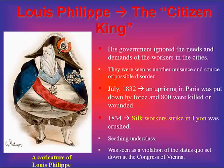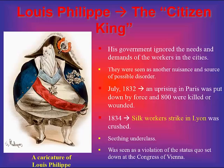However, the liberal monarchy had little or no sympathy for the working and lower classes. Workers were demanding protection for their jobs, better wages, and preservation of traditional crafts — all of which were basically ignored. Louis-Philippe felt they were a nuisance and a source of possible disorder. In late 1831, troops suppressed a workers' revolt in Lyon. In July 1832, an uprising in Paris was put down by force, with about 800 killed or wounded — known as the July Days — occurring during the funeral of a popular Napoleonic general. In 1834, the silk workers' strike in Lyon was also crushed.